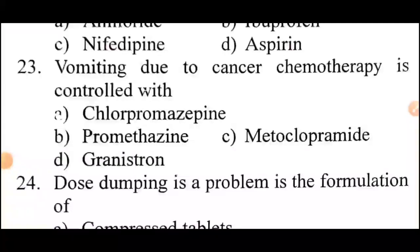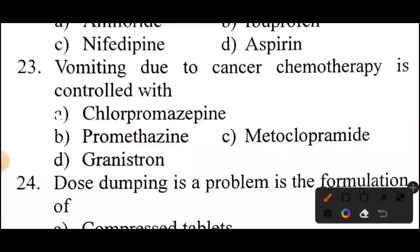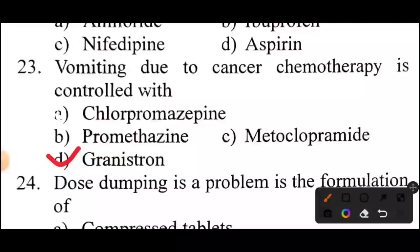Question 23: Vomiting due to cancer chemotherapy is controlled with — Answer: Option D — Granisetrone.